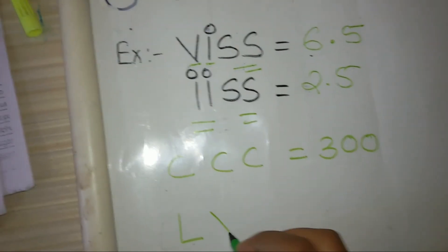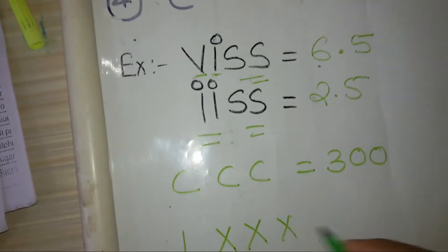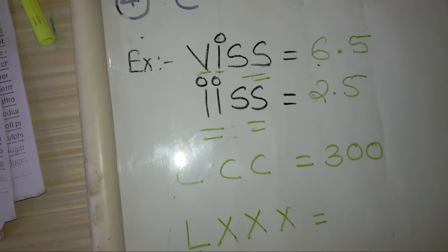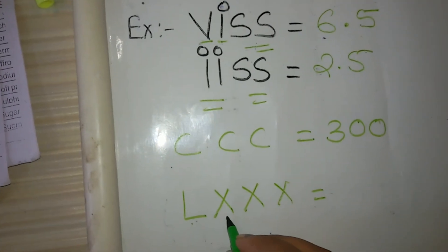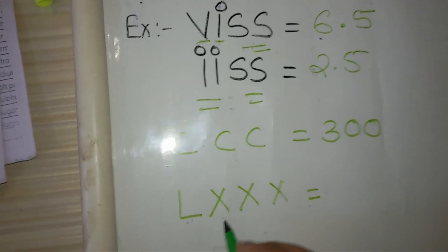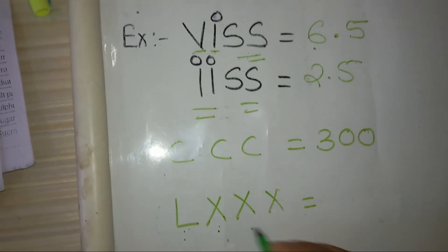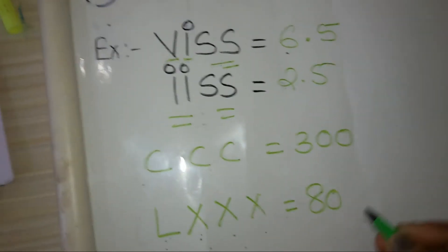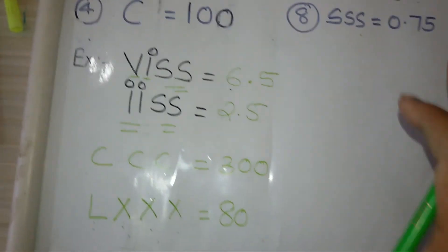Another example we will take is LXXX. L equals 50, X equals 10. Therefore, 50, 60, 70, 80. So it is 80. This is about the Roman numbers.